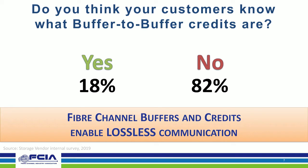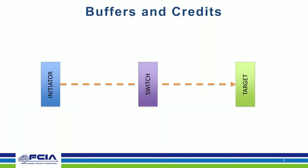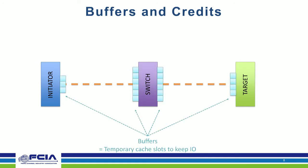Fiber Channel buffer credits are there to enable losslessness. In a simple system with an initiator, a switch, and a target, every connection point — whether an HBA, a switch port, or a storage array port — has a certain number of buffers. A buffer is a small memory cell that each HBA or connection port has to keep an IO while it's being processed. They're temporary.